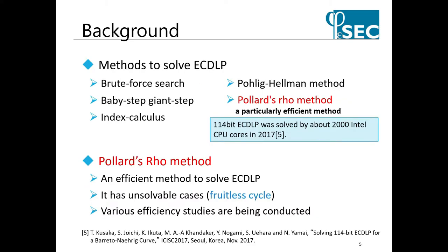These methods are known as methods for solving ECDLP. Pollard rho method is a particularly efficient method. As a study using Pollard rho method, 140-bit ECDLP was solved by about 2,000 Intel CPU cores in 2019. It is very important to verify how many bits are safe by performing the rho method more efficiently. We focus on Pollard rho method used in this world record.